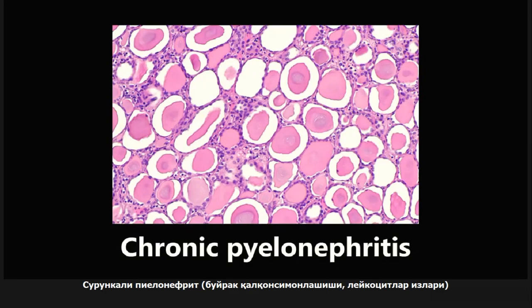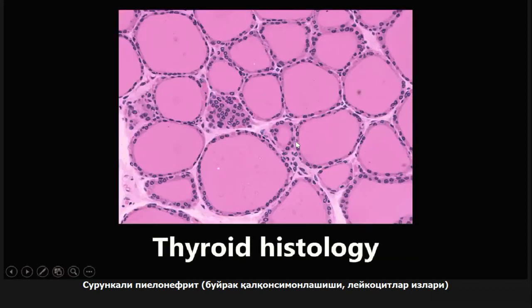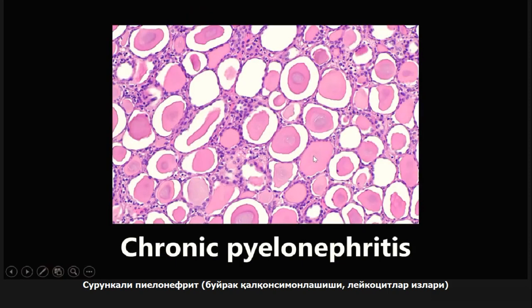This is an example of chronic pyelonephritis. The giveaway is what's called thyroidization of the kidney — recurring chronic kidney infection causes a buildup within the tubular interstitial cells making it look like the thyroid. If you see this, think chronic pyelonephritis. We also talked earlier about white blood cell casts being associated with pyelonephritis — you'll see both with chronic pyelonephritis.